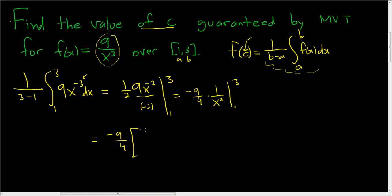Let's see, plug in 3, 1 over 9, right? 3 squared is 9. Plug in 1, 1 over 1, so 1. This is negative 9 fourths. Let's see, this is 1 ninth minus 9 ninths.